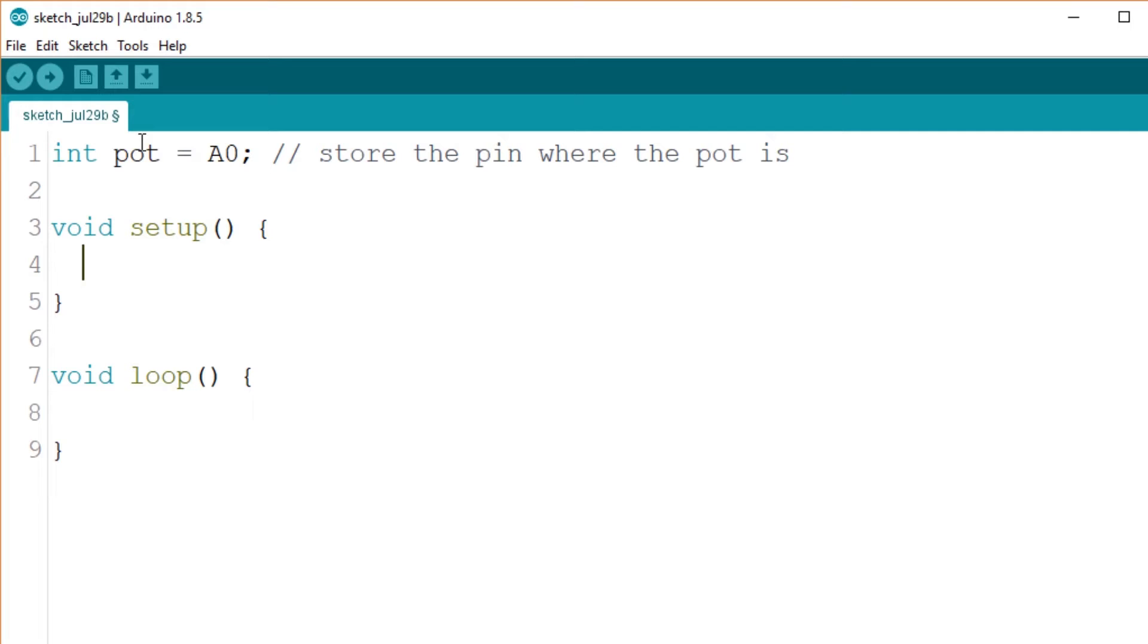Next, initialize the serial component of the Arduino. This is the part that allows the communication with the computer. This will be the next video's topic. For now, set the serial to a speed of 9600 bits per second.